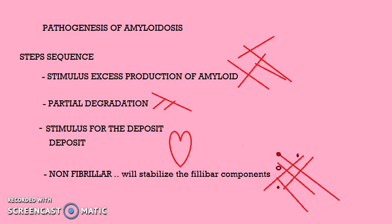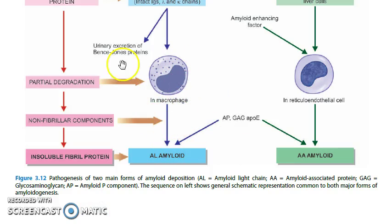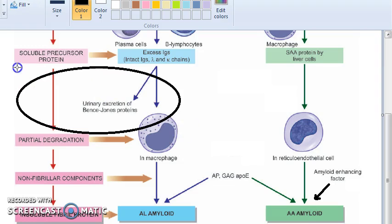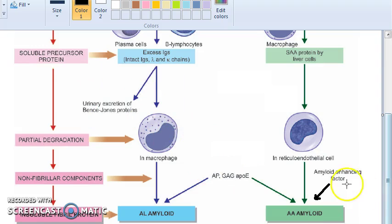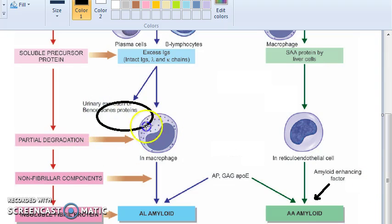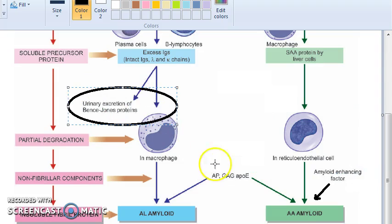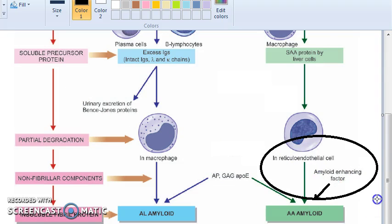As usual we are going to close this video with the references — Harshmohan's Textbook of Pathology. One important distinction: in the partial proteolytic degradation for AL, it is the macrophage, and for AA it is the reticuloendothelial system. Also, there is urinary excretion of Bence-Jones proteins in AL, and amyloid enhancing factor helps the deposition in AA.